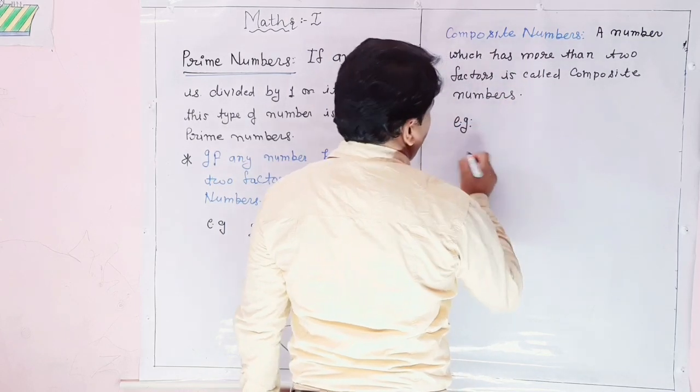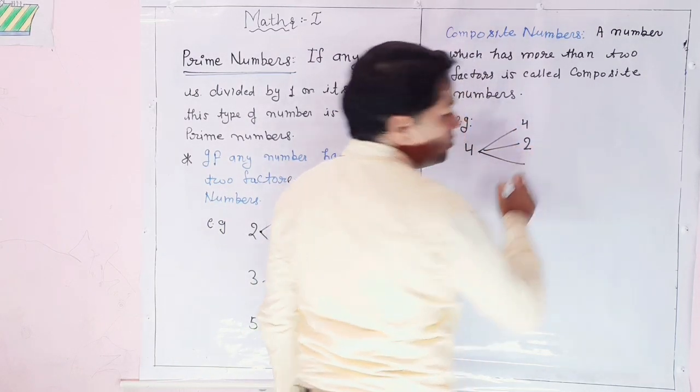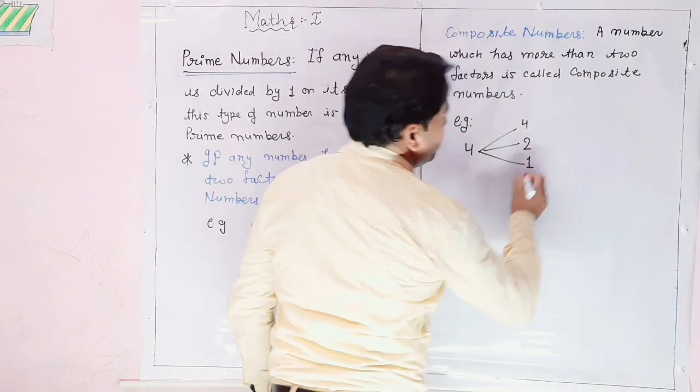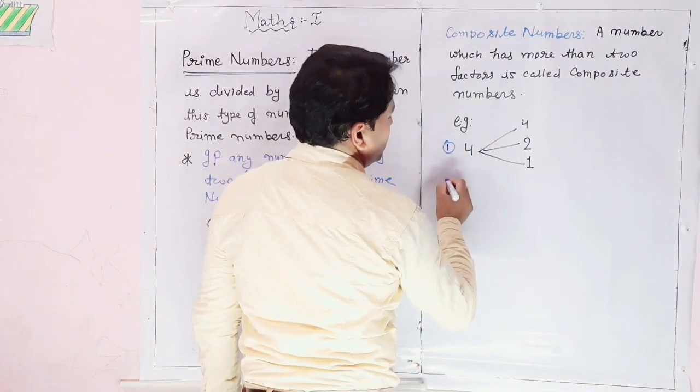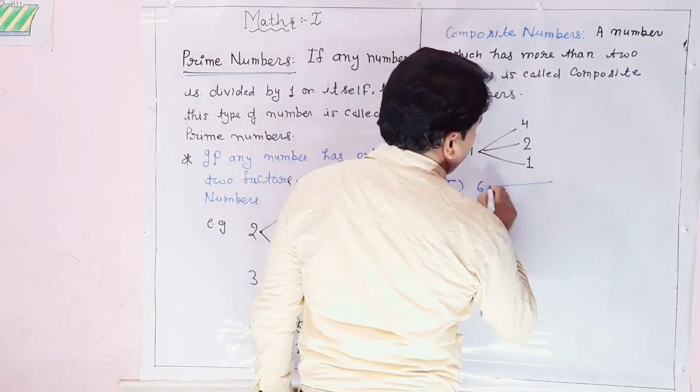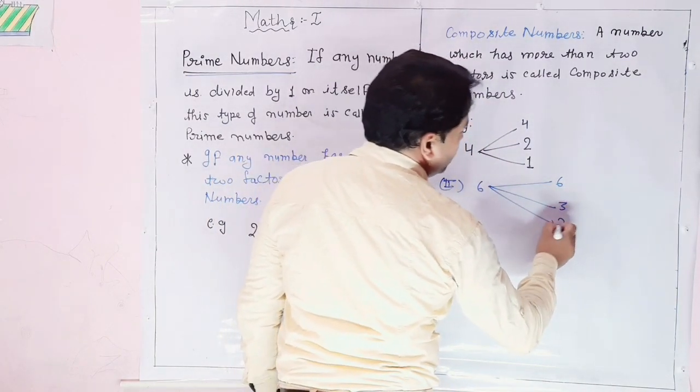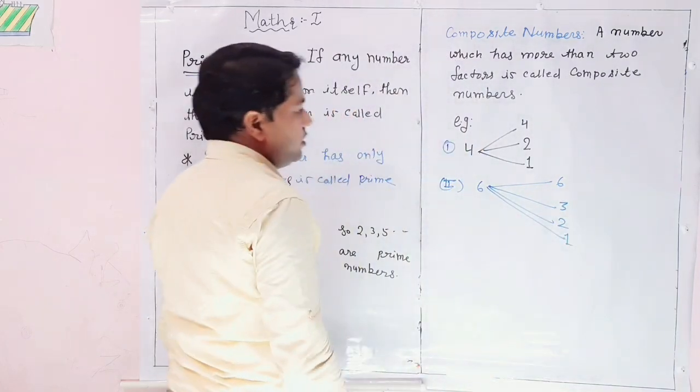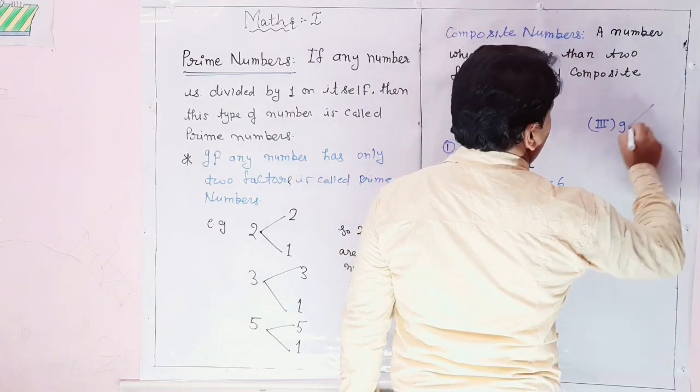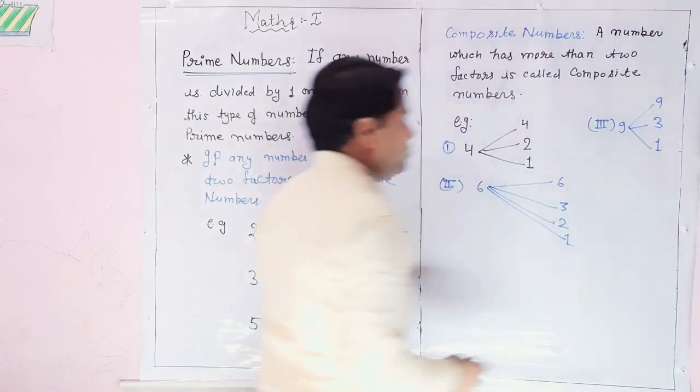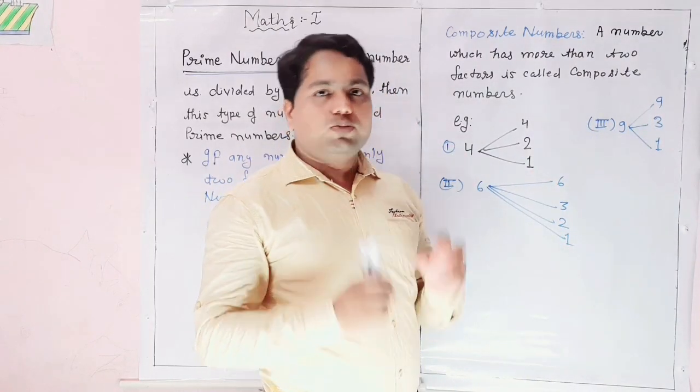For example, 4. You will see, 4 can be divided by 4, 4 can be divided by 2, and 4 can be divided by 1. 6: 6, 3, 2, 1.